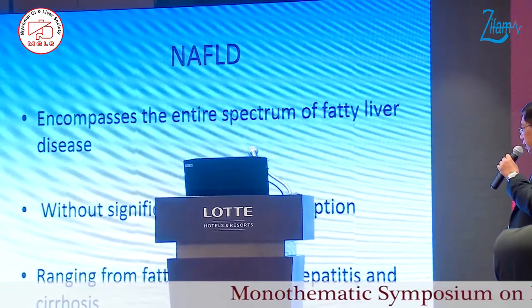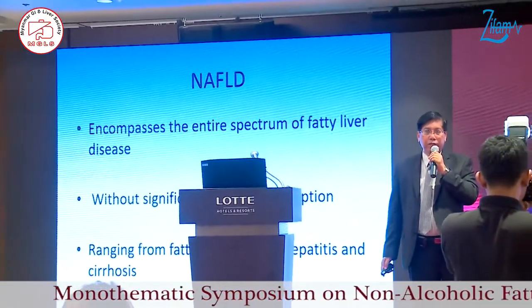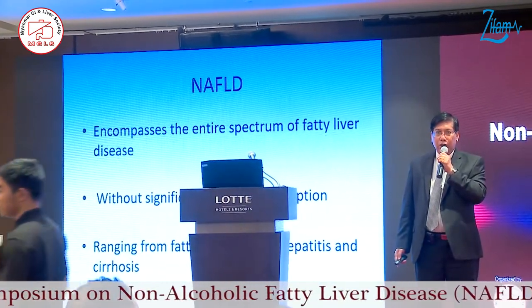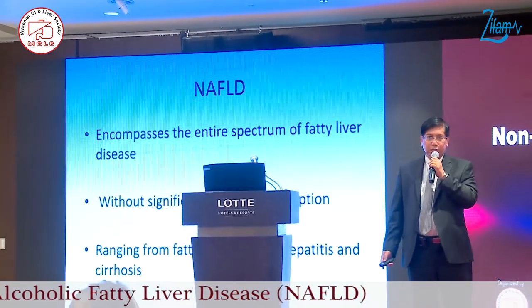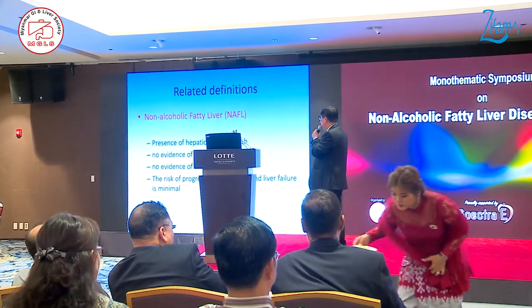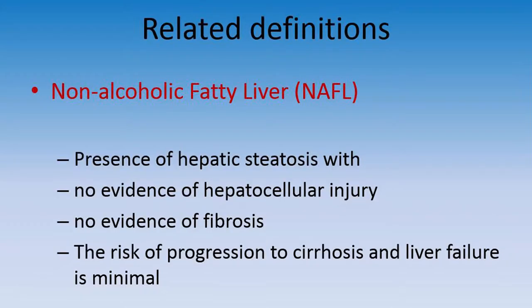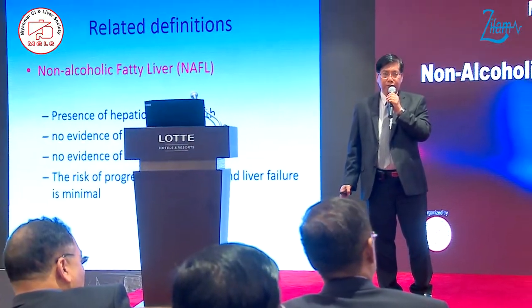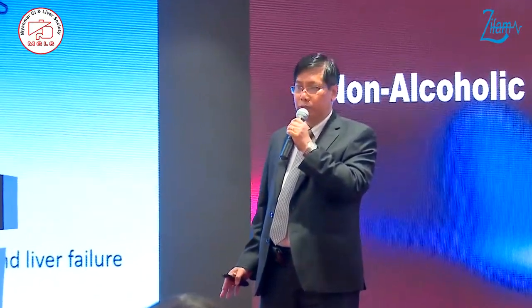NAFLD is a spectrum of disease starting from fatty liver — non-alcoholic fatty liver disease — through cirrhosis, and finally NAFLD-associated liver cancer. NAFL is the presence of hepatosteatosis, meaning fat in the liver, but there is no evidence of hepatocellular injury. This is a very early stage of NAFLD — fatty liver disease — with no hepatocellular injury and no evidence of fibrosis.